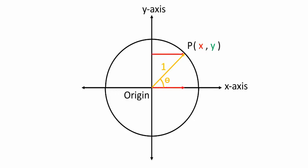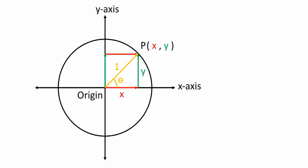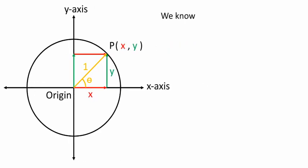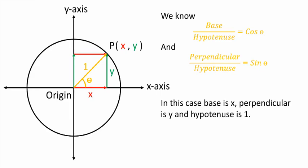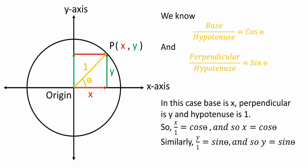The radius is equal to one unit in length and it touches the circle at point P, whose coordinates are x and y. These two horizontal vectors represent the x-coordinate of point P, and these two vertical vectors represent the y-coordinate of point P. We know base over hypotenuse equals cos theta, and perpendicular over hypotenuse equals sine theta. In this case, base is x, perpendicular is y, and hypotenuse is one. So x equals cos theta and y equals sine theta.